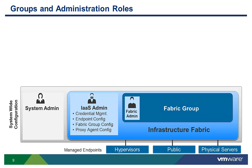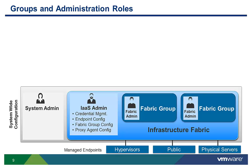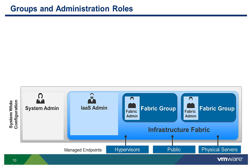Fabric groups can also be used to segregate resources used by one organizational group from another. Many companies will likely only have one fabric group. However, if you need to make sure that one tenant or business group cannot have VMs on the same host as another, you can allocate the resources from different fabric groups. This completes an overview of fabric management.